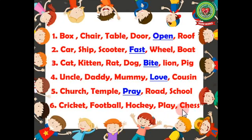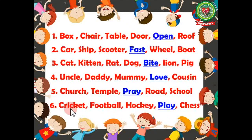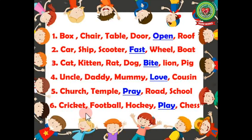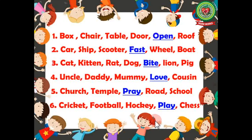Number six: cricket, football, hockey, play, chess — underline the word which is not a naming word. The answer is 'play'. Cricket, football, hockey, and chess are all names of things, so they are nouns. 'Play' is not a naming word, so we will underline it.